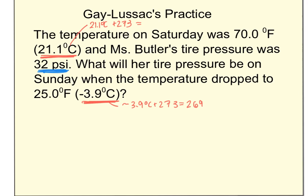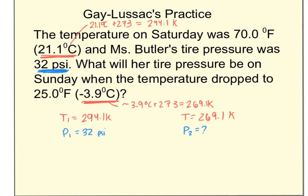Negative 3.9 gives me 269.1 Kelvin and 21.1 gives me 294.1 Kelvin. I'm not dealing with Fahrenheit — it's easier to just go from Celsius to Kelvin. Let me list this out: my first temperature T1 is 294.1 K, changing to T2 of 269.1 K, and the pressure at 294.1 K was 32 psi. I want to find the new pressure.